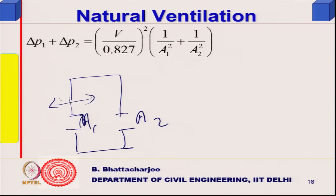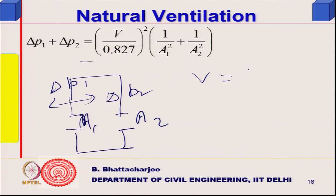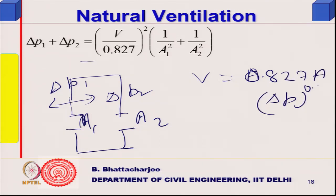Delta P1 is the pressure difference at the first opening, delta P2 at the second. The total flow uses the formula: flow equals A times 0.827 times delta P to the power 0.5.